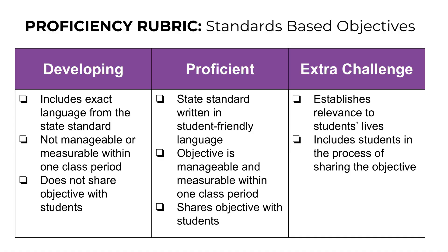We'll take a look one more time at this proficiency rubric to make sure we achieve all the proficient criteria. Again, you'll craft a learning objective that comes from a state standard, written in student-friendly language. Make sure you can tell us the state standard — whether it's 1A, 2B, or 12C — have that information available. Your administrator would definitely like to know the student expectation. This objective should be manageable and measurable within one class period, and you need to verbally share the objective with students. For the extra challenge, establish the relevance to students' lives and find a way to include students in the process of sharing the objective.